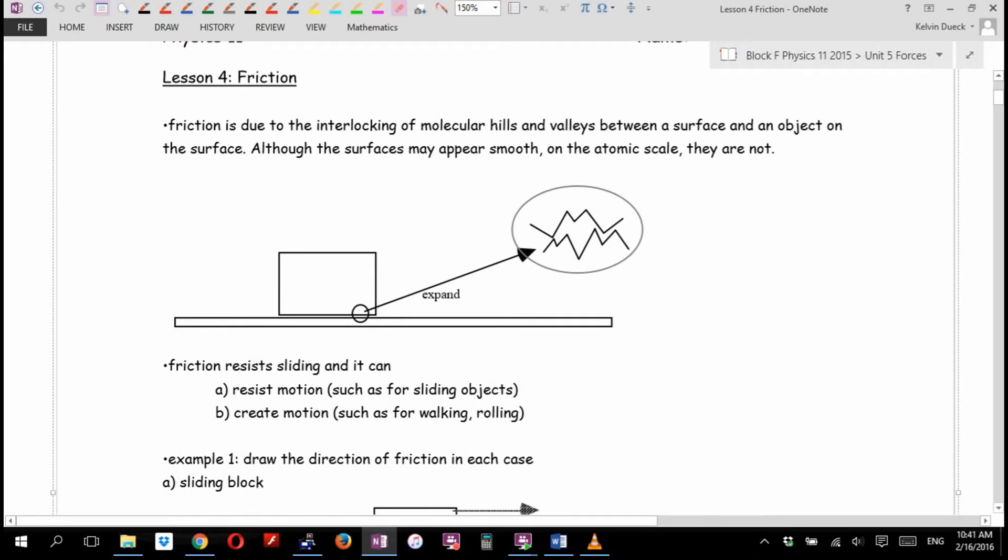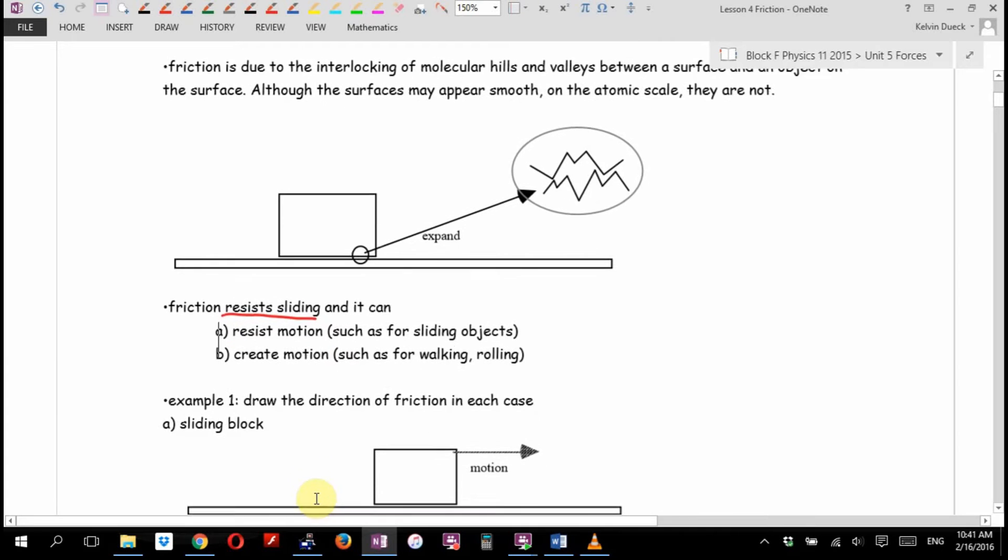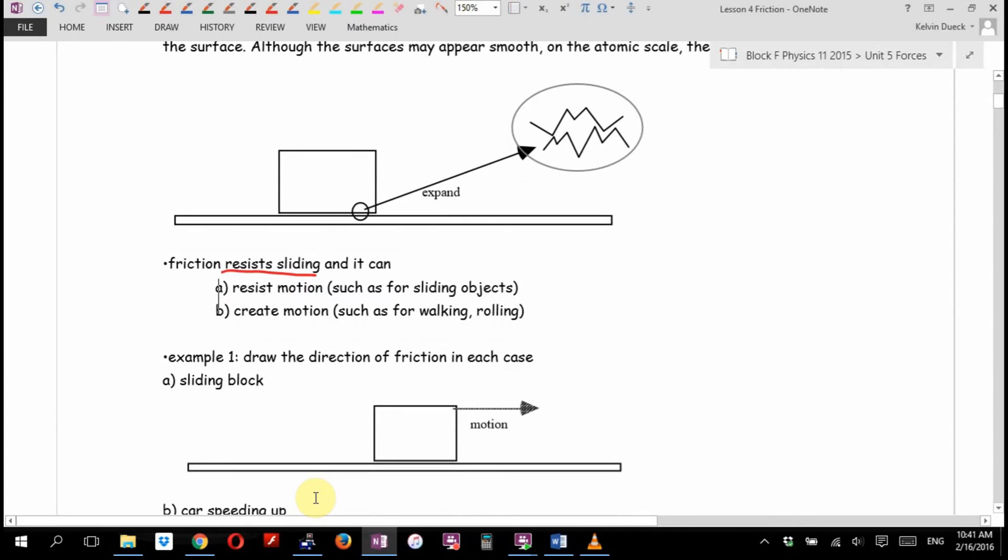Key idea: friction resists sliding. And by doing that, it can resist motion, such as when I pulled on that table and it didn't move. But it can also create motion because when you walk, it's friction that pushes you forwards, which is why it's so tough to walk on ice. Or when you drive, it's friction from your tires that pushes the car forwards, which is why it's so tough to drive on ice.